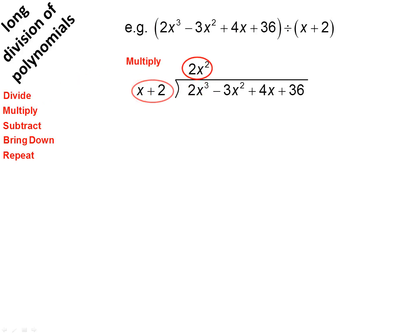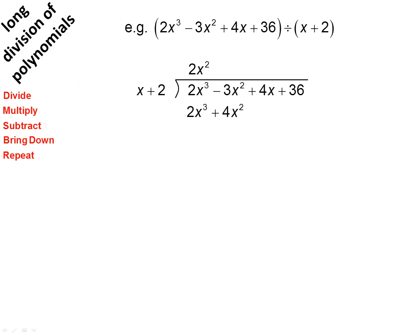Next step, we're going to multiply: 2x squared times x plus 2, giving us 2x cubed plus 4x squared. Now we're going to subtract — change the sign on the bottom line and add. Those cancel, and you get minus 7x squared.